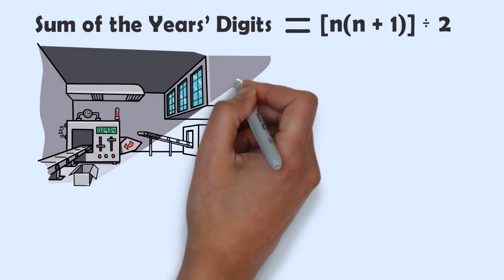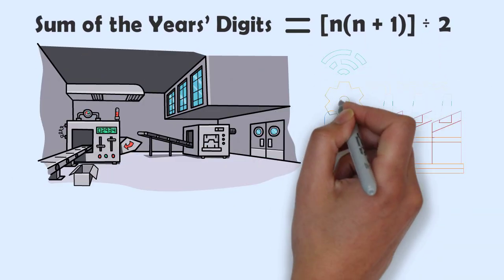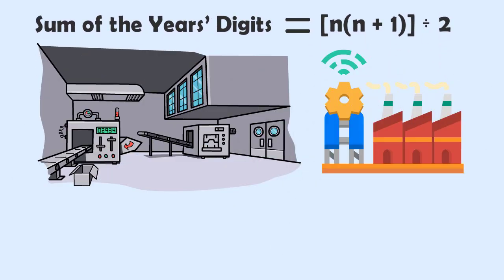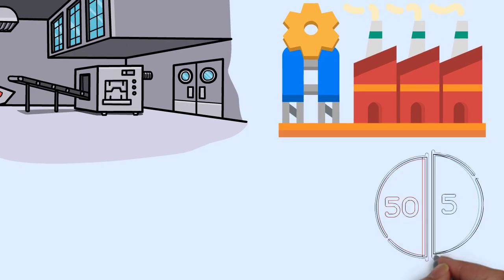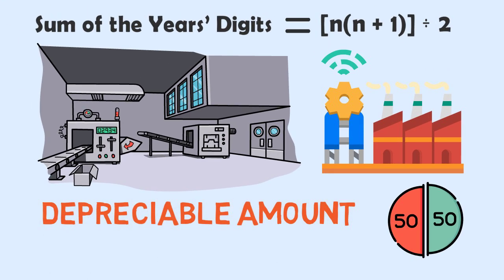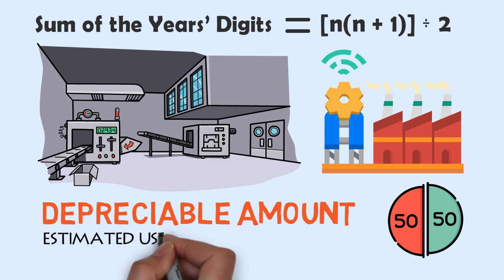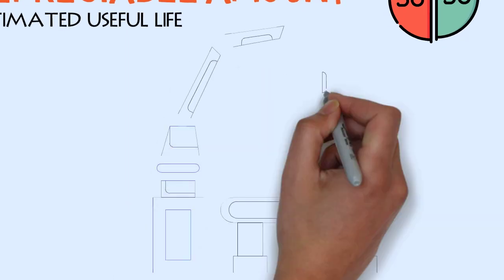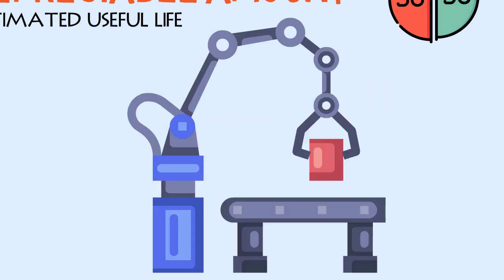Under the units of production method, the number of units the asset will be able to produce over its useful life is determined. Then the appropriate ratio of the depreciable amount is recognized as a depreciation expense for each period, based on the actual production of the asset during that period.